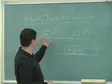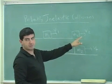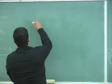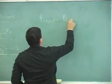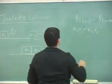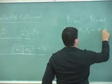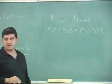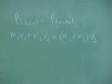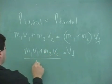We assume this happens on a frictionless surface, so the momentum after the collision equals the momentum before. Momentum initial total equals momentum final total: m1·v1 + m2·v2 = (m1 + m2)·v_final. Therefore the final velocity equals (m1·v1 + m2·v2) divided by (m1 + m2).